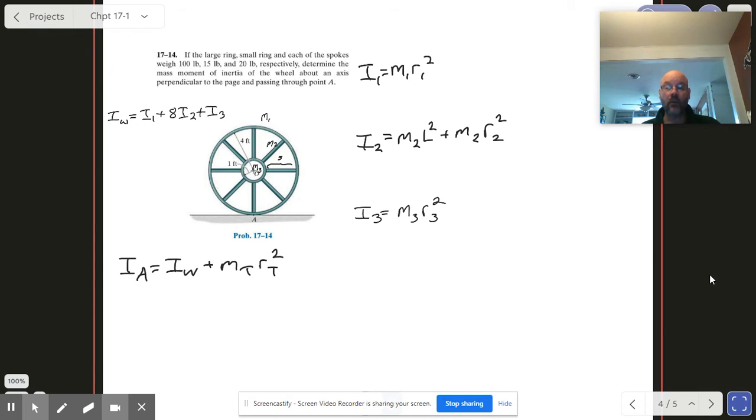So we have this wheel and it's a hoop within a hoop and there are eight spokes connecting it. It gives us all our information here regarding how massive these pieces are and our goal is to find the moment of inertia about the center. It says axis perpendicular to the page and passing through point A.